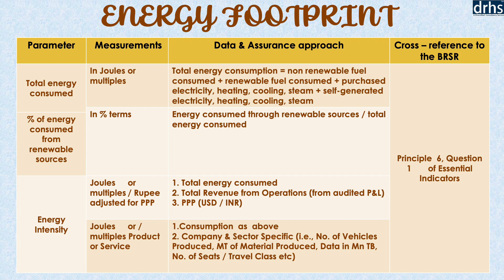This slide shows the core indicator related to energy footprint, having cross-references to BRSR principle 6, question 1 of essential indicators. It is largely focused on total energy consumed and energy intensity per rupee adjusted for purchasing power parity, and per product or service measured in joules. The slide also shows the data and assurance approach to be followed.